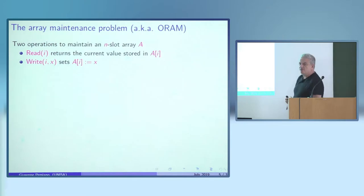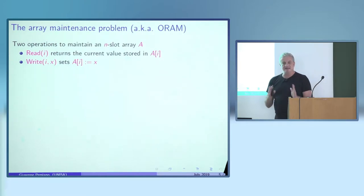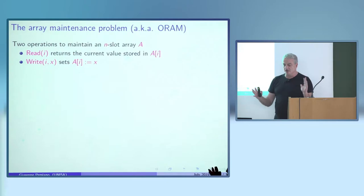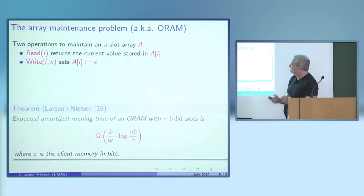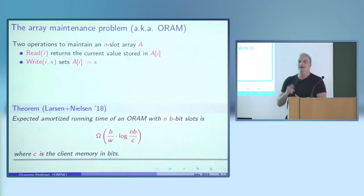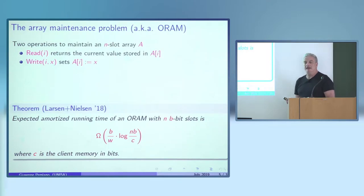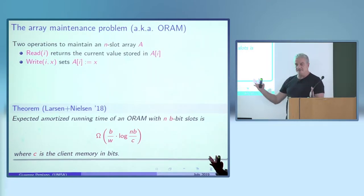This was applied to the very simple array maintenance problem — the ORAM problem — where you have an array with n slots and can only do reads and writes with obvious semantics. The lower bound is: if you have n b-bit slots, you need essentially b/w just to read, times log n, where the overhead is log n times b over c, where n is array size, b is bits per entry, and c is client memory.